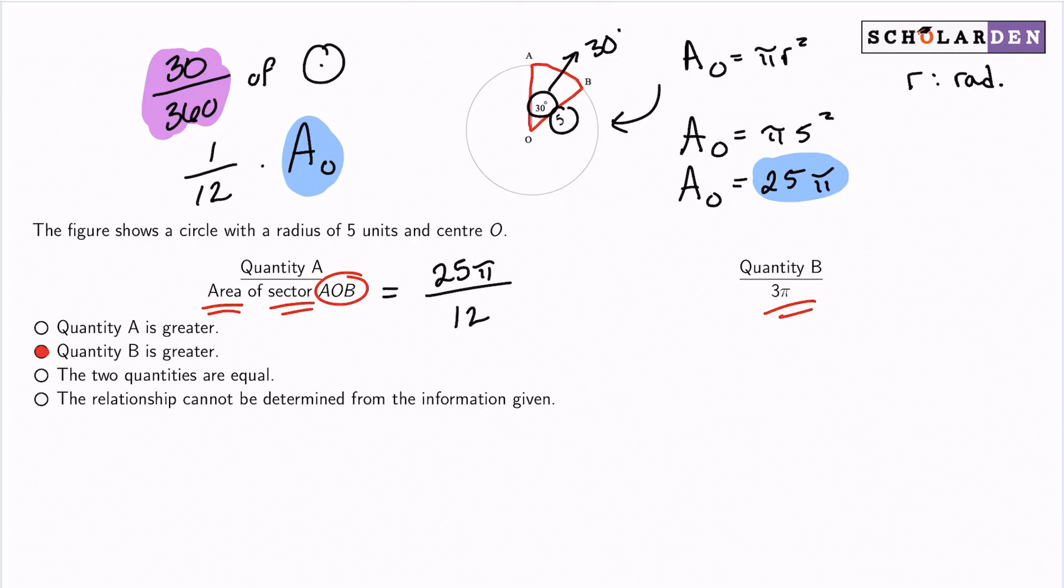So which is greater, 25π over 12, or 3π? Well, we can just ignore the π's because there's a π in each. So we're really just comparing 25 over 12 with 3.